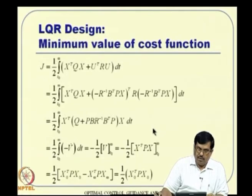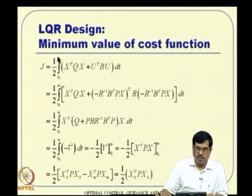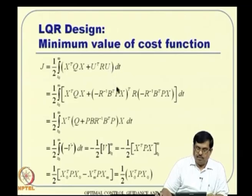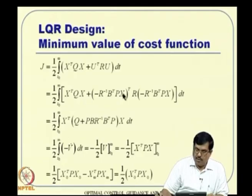What is the minimum value of the cost function? The cost J equals half the integral from T_0 to infinity of X transpose Q X plus U transpose R U. We substitute U = -R inverse B transpose P X, expand U transpose, and note that P is symmetric (P transpose = P), R is symmetric, and simplify. After algebra, we are left with an expression involving X transpose Q X and P B R inverse B transpose P.